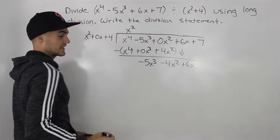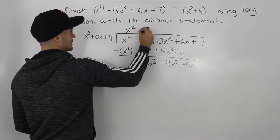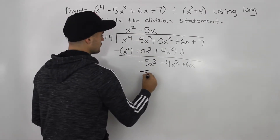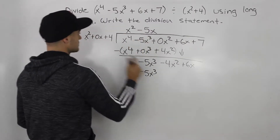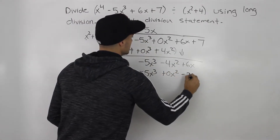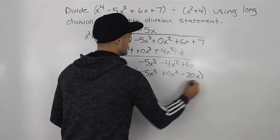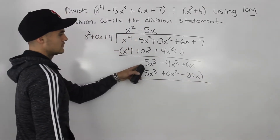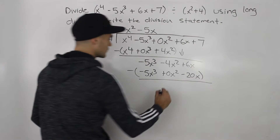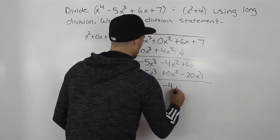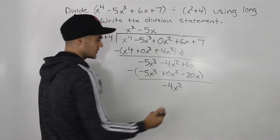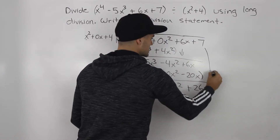And let's bring this 6x down. How many times does x squared go into negative 5x cubed? Negative 5x times. So multiplying all the terms in the divisor, we'd have negative 5x cubed. Negative 5x times 0x gives us 0x squared, and negative 5x times 4 gives us negative 20x. So when we subtract, the negative 5x cubed terms cancel out. Negative 4x squared minus 0x squared gives us negative 4x squared. And 6x minus negative 20x is 6x plus 20x, which gives us 26x.